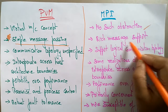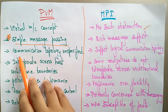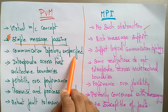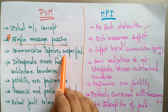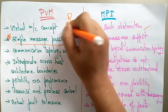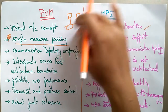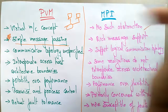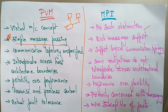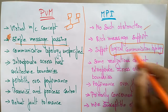In PVM, the communication topology is unspecified. Communication topology refers to how one node is connected to another — what type of topology is not specified in PVM. But Message Passing Interface supports a logical communication topology.